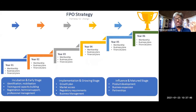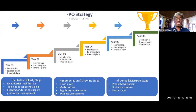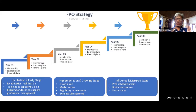As an organization, we need to look at typically three stages in the formation and growth of any FPO. Initially it is about incubation and the early stage, where you identify members, mobilize them, build their capacity, go for registration, provide technical support, and create professional management systems. This may take typically one to two years.